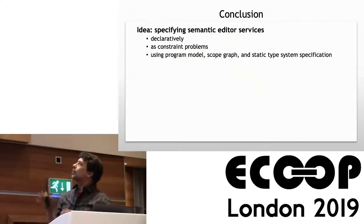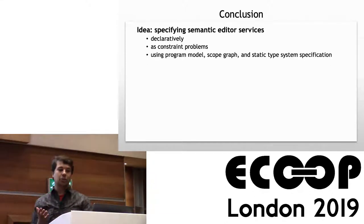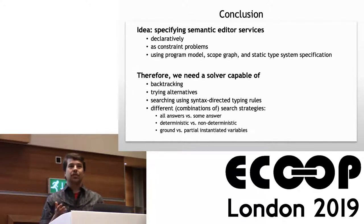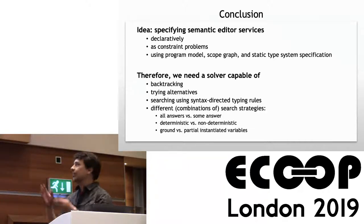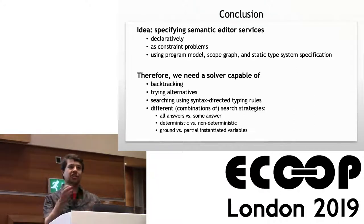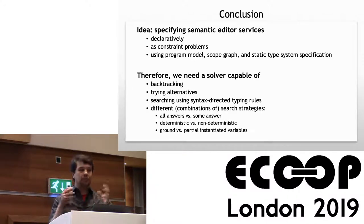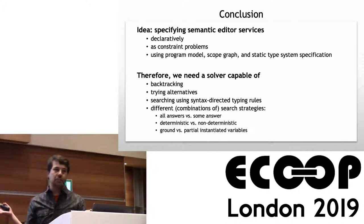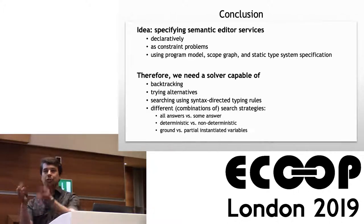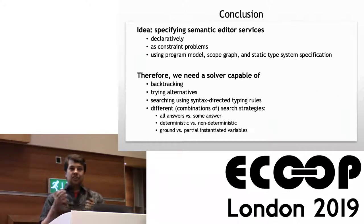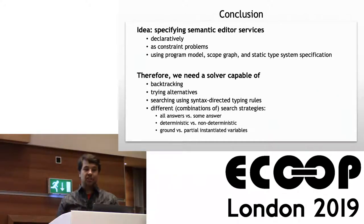The idea is to specify semantic editor services declaratively as constraint problems, and use the program model — the scope graph — and the static type system specification. But the solver we currently have for STATICS needs to be extended: we need something able to backtrack, try different alternatives, and search using syntax-directed rules. We need to control the search: how deep do we want to search, do we want all answers or some answers, do we search deterministically or non-deterministically, and do we allow variables to be partially instantiated or must they be ground?